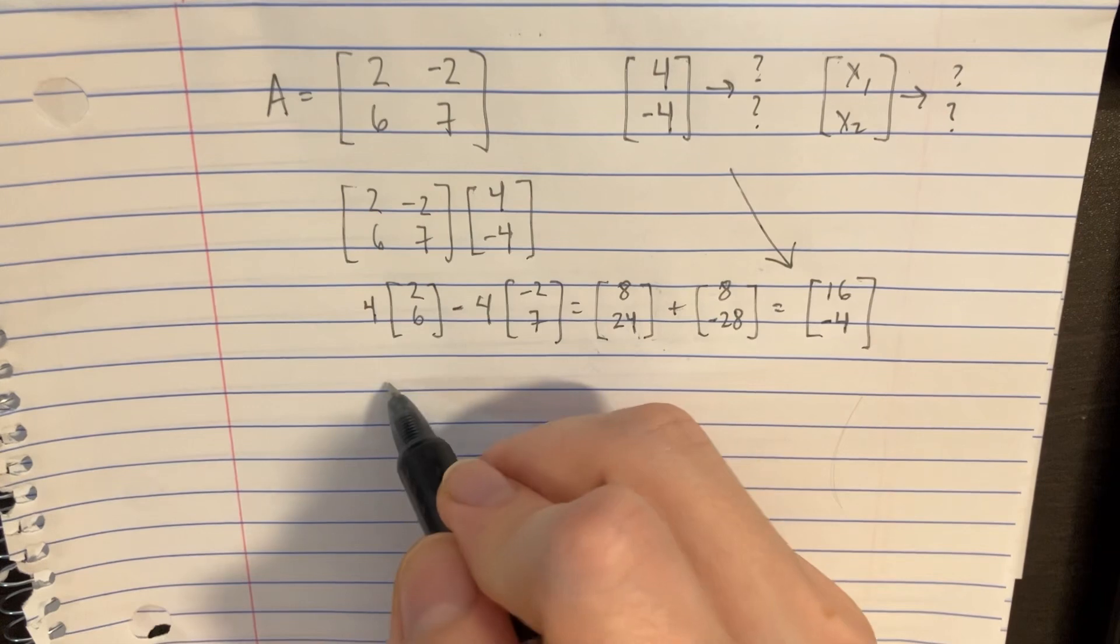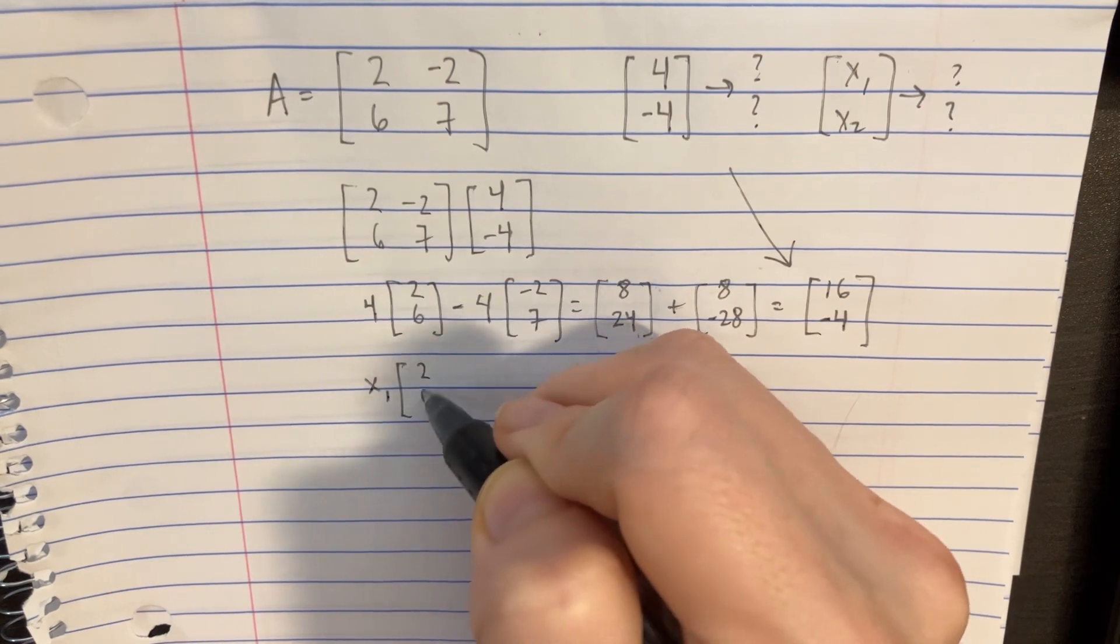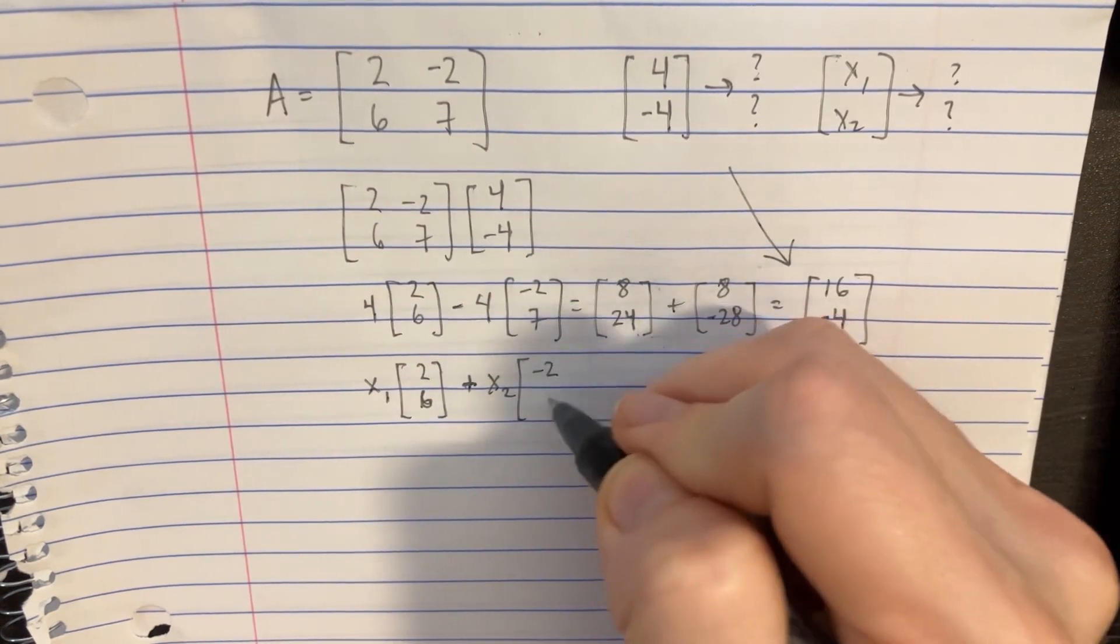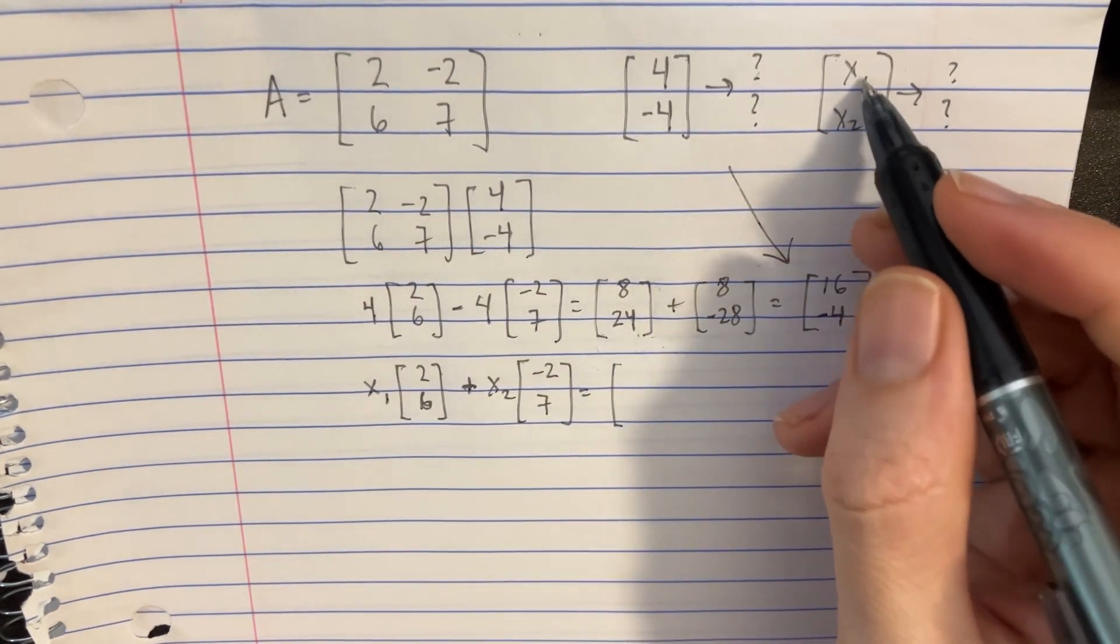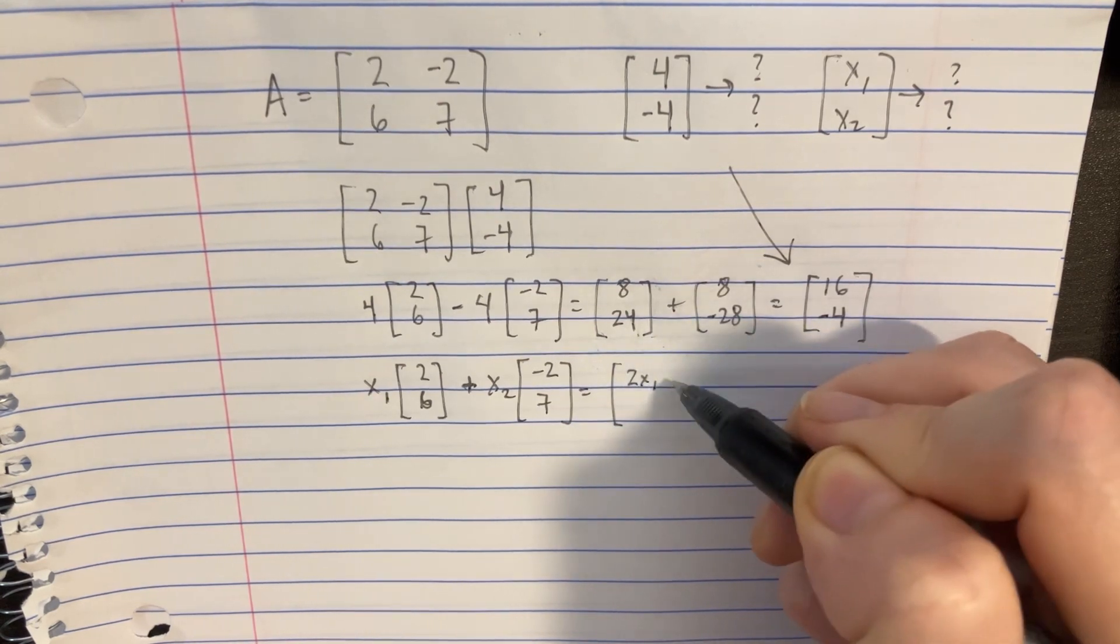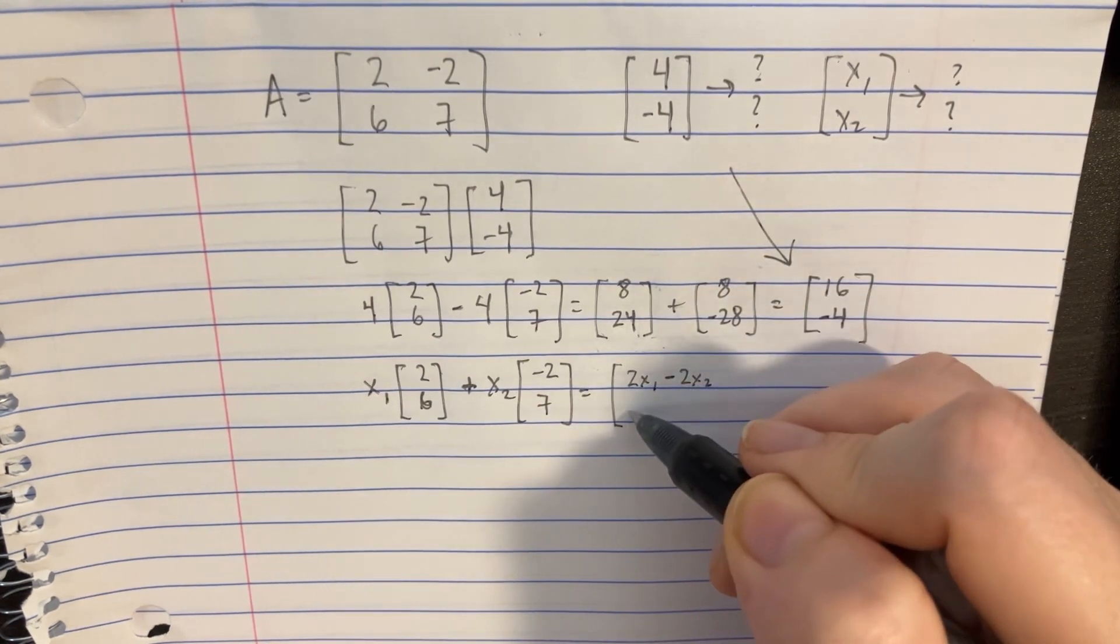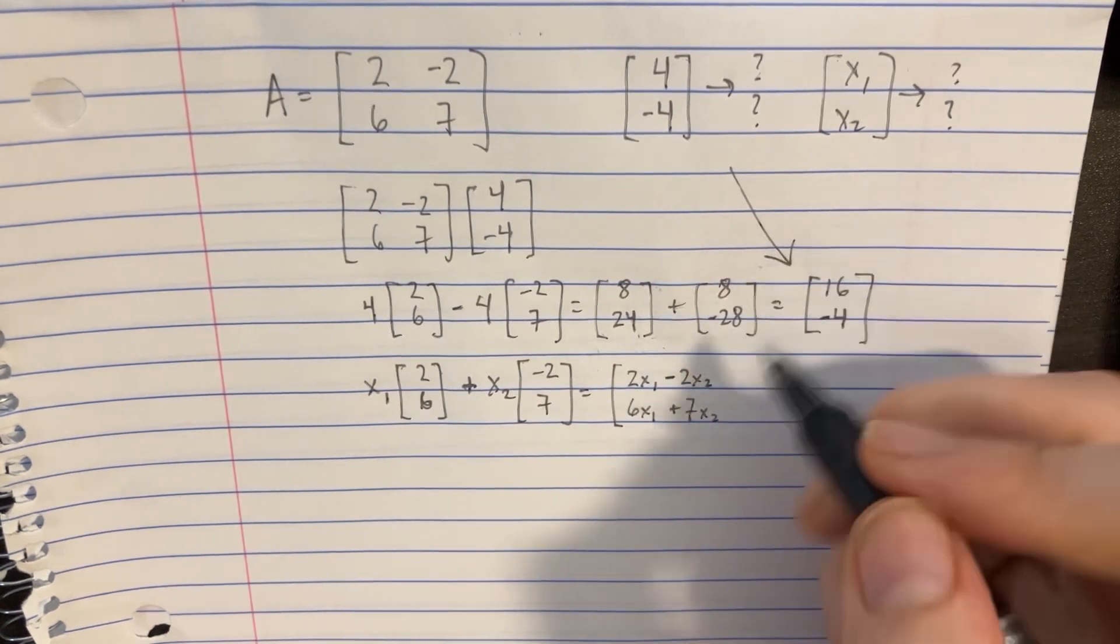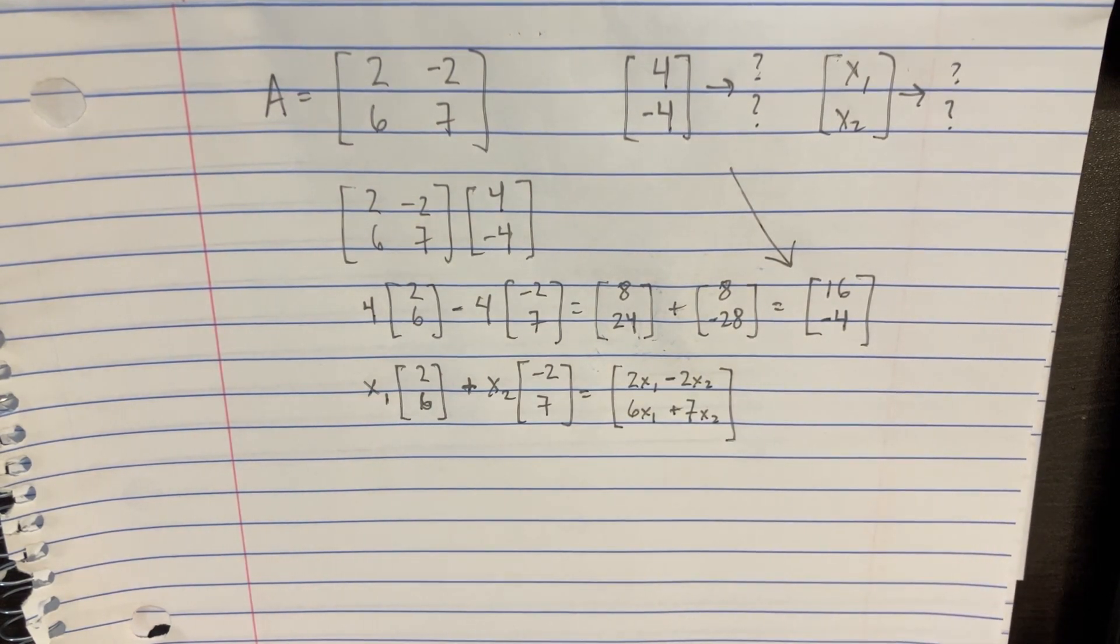Now for x1 and x2, we just do a similar thing, but we'll have x1 being over here for the 2, 6, and then plus x2 for the negative 2, 7 thing. And so that can basically just be boiled down to a single matrix here. Keep in mind, it's just going to be one column. So that way it would be 2x1 minus 2x2 in the first column, and then in the second column, it would be 6x1 plus 7x2. This whole thing is just one single column, two rows. All right, so those are our answers and our images.